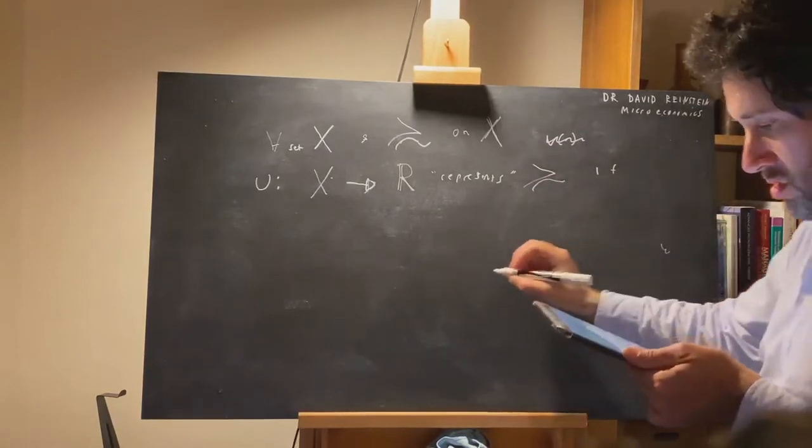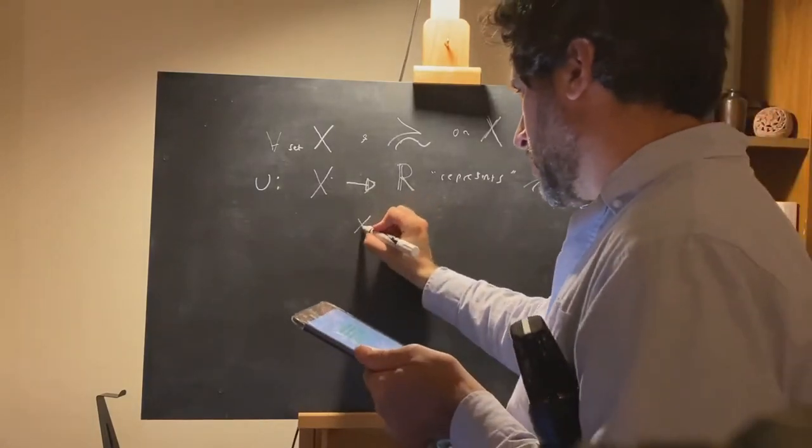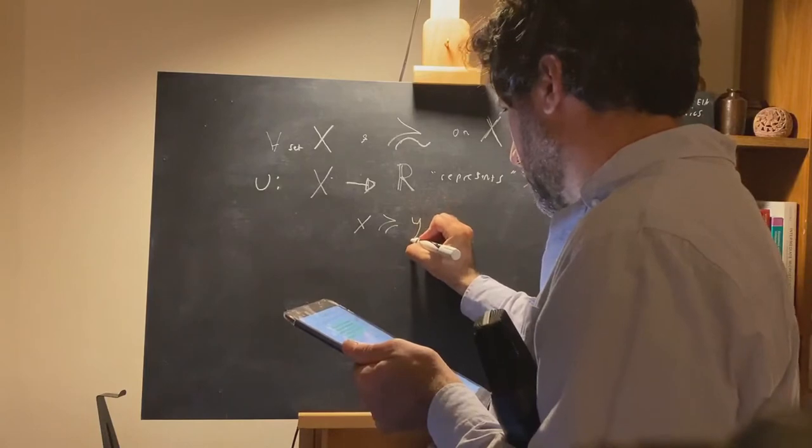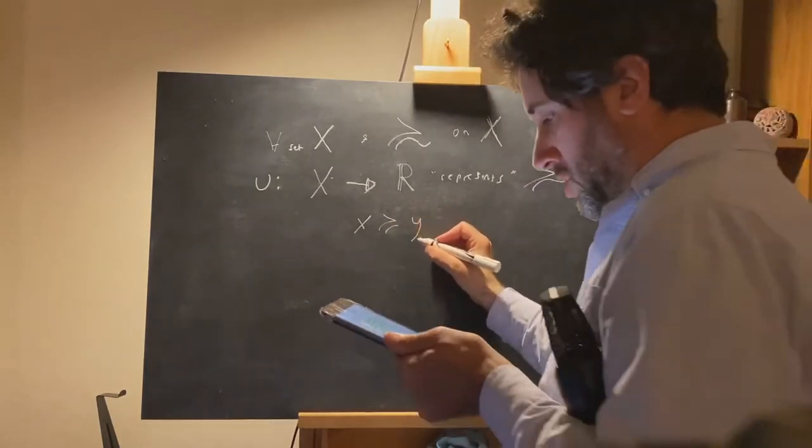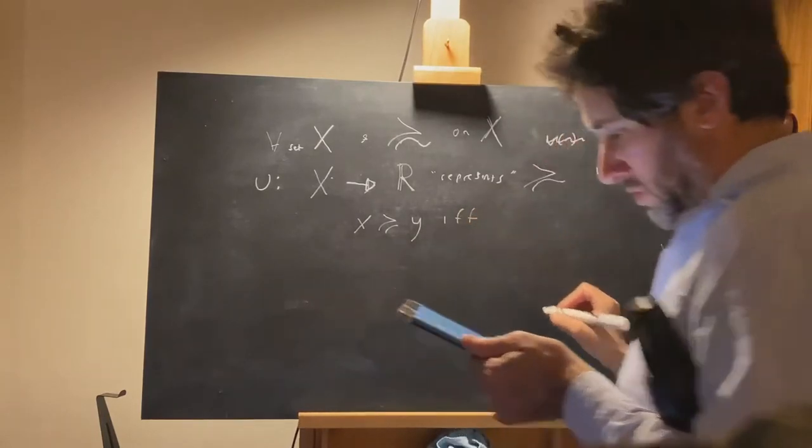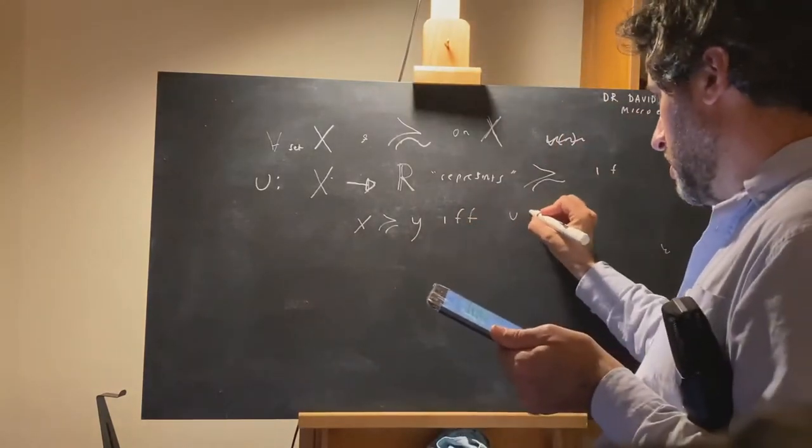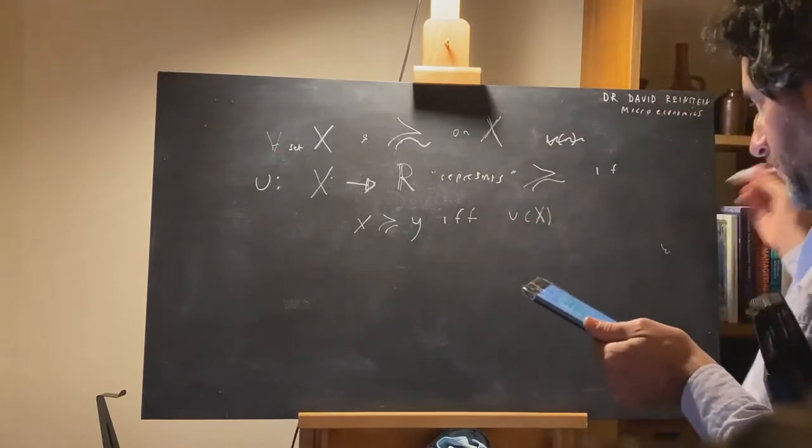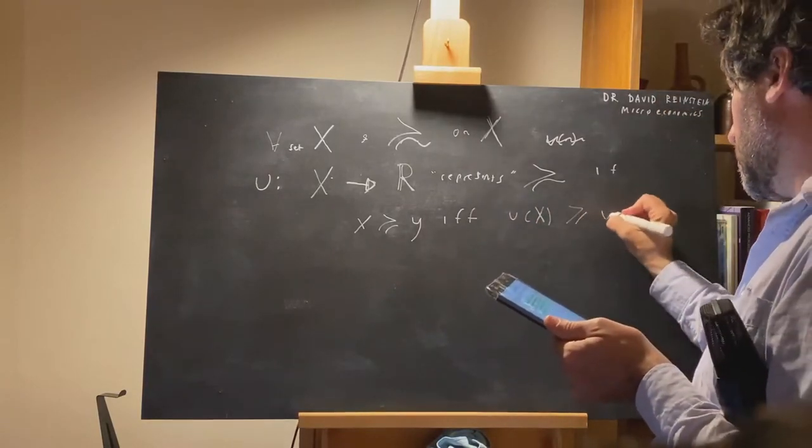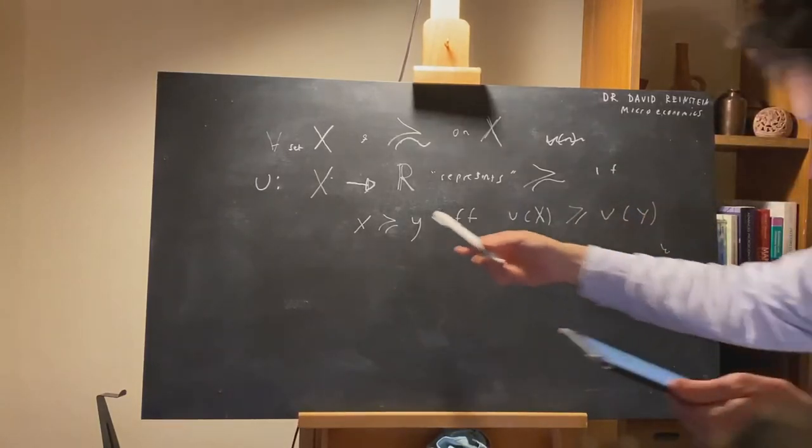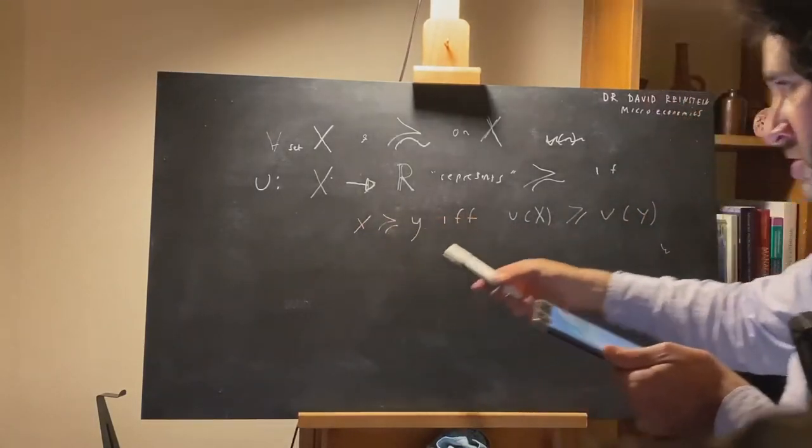This is pretty straightforward. X is at least as good as, or weakly preferred to, or at least as good as Y, if and only if utility of element X is greater than or equal to the utility of element Y, and here X and Y are elements of larger set X.